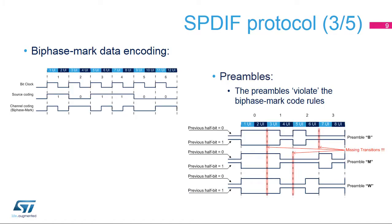The digital audio data are coded using biphase mark encoding. Note that with biphase mark encoding, there is a transition at the boundary of each bit. The preamble length is four bits, and some transitions on the preamble do not respect biphase mark encoding — this is used by SPDIF receivers to easily detect block and subframe boundaries. UI means unit interval and represents the shortest nominal time interval in the coding scheme.